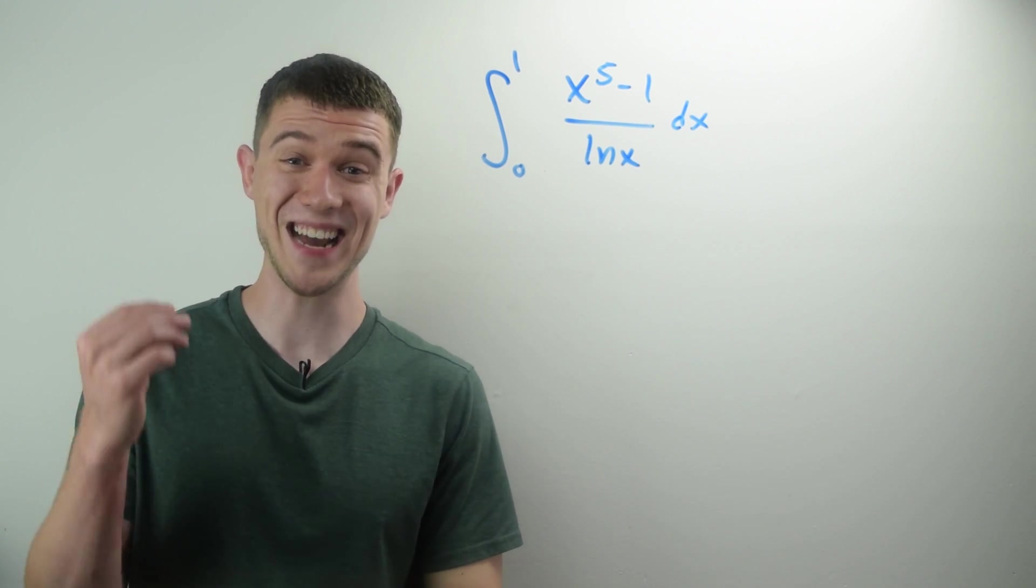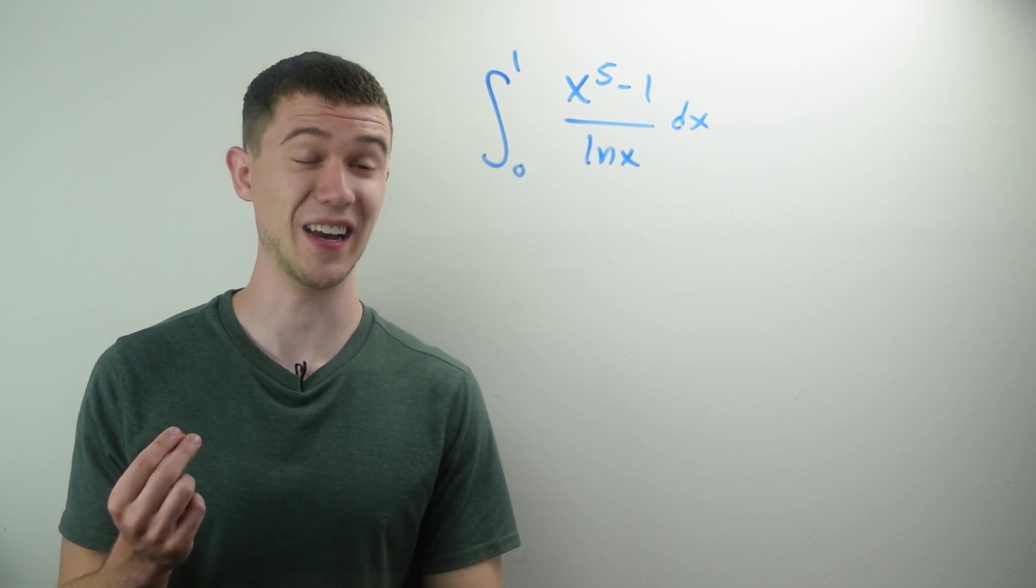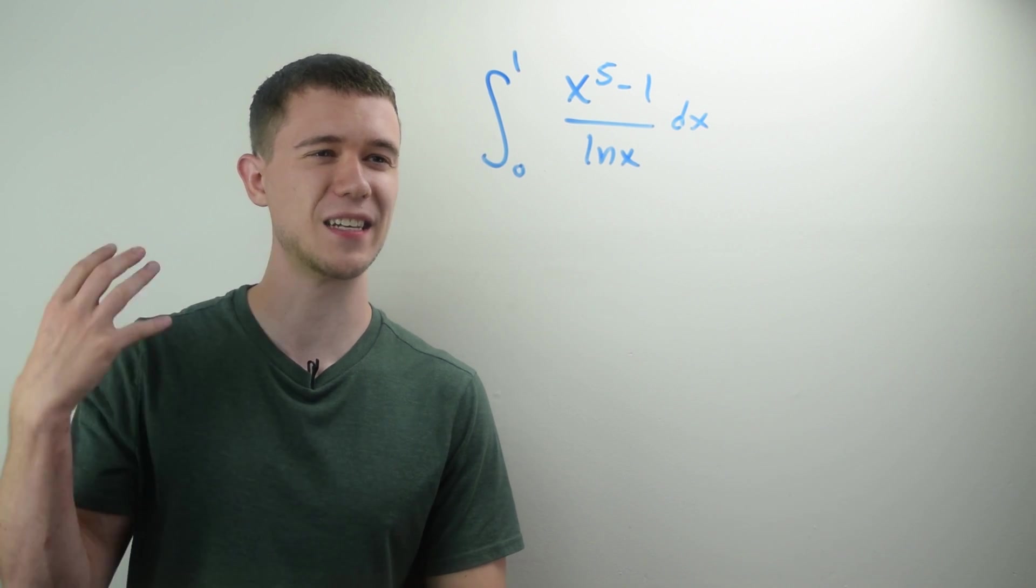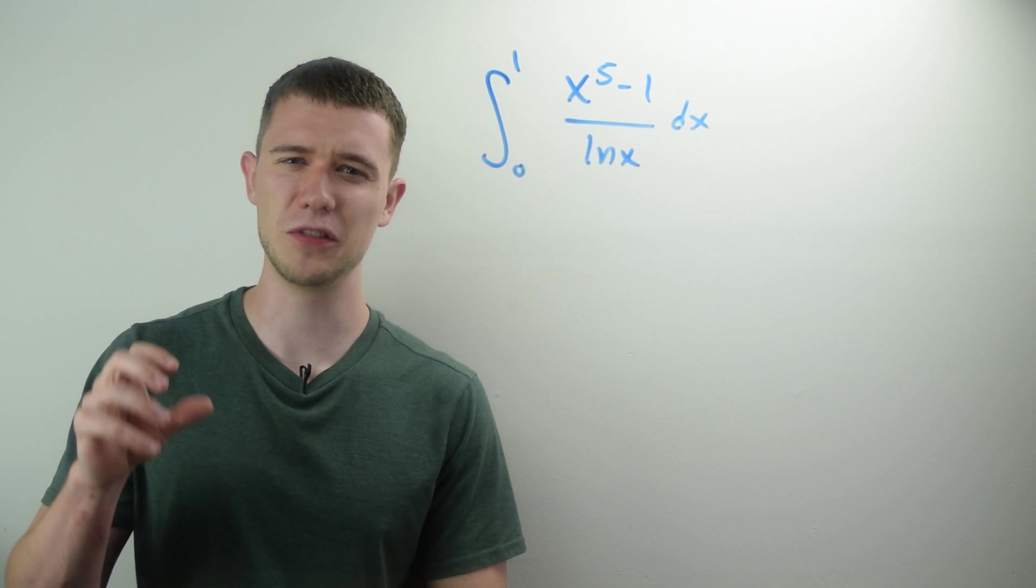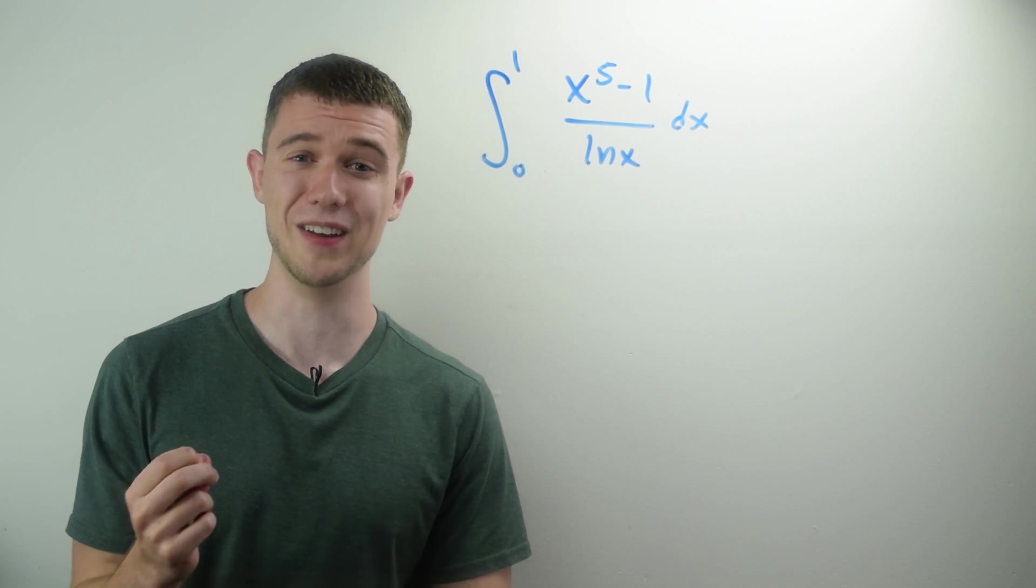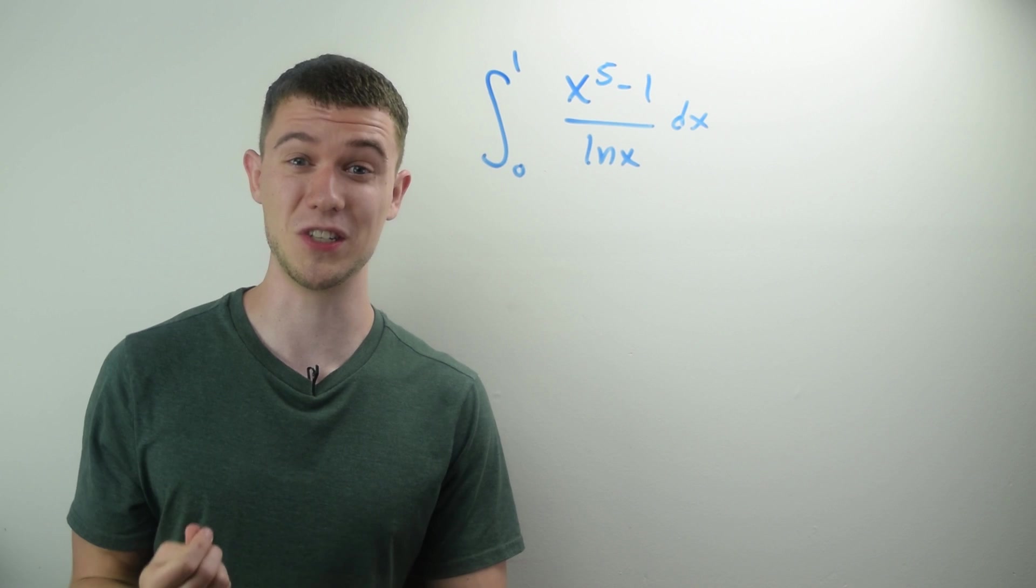Here I have a pretty nasty definite integral for you to look at. The definite integral from 0 to 1 x to the 5th minus 1 over natural log x dx. Now just think for a second, how would you do this? I'm curious as to what you think.